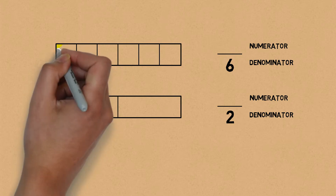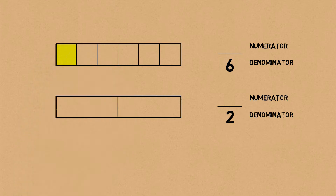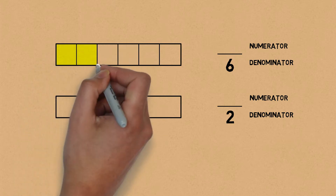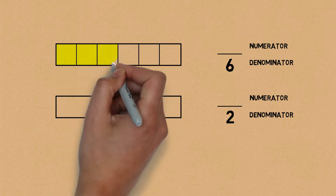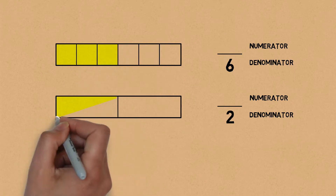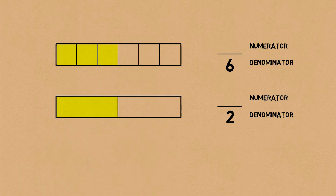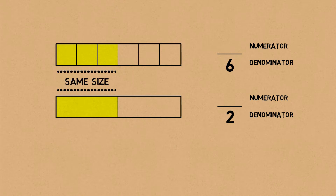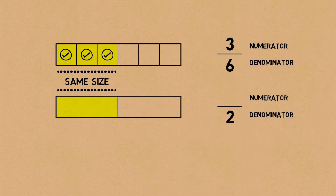I'm going to use my highlighter and shade the same size in both bar models. Now you can see that both of these shaded areas are the same size. We've got three parts shaded here out of the six parts, so the numerator would be three — this is three sixths. And one half is shaded here.